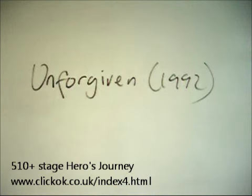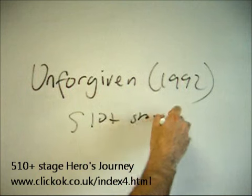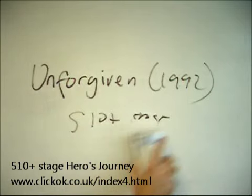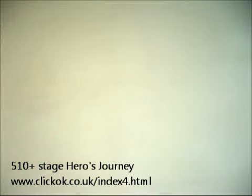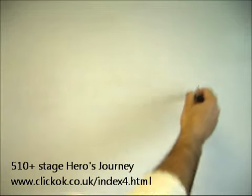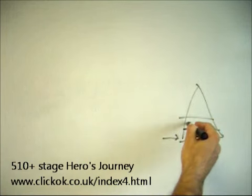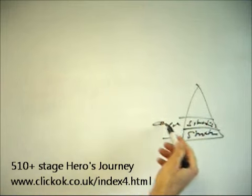I want to pull out some of the major points of Unforgiven, an Academy Award winner. It follows a 510-plus stage Hero's Journey pattern — a classic Hero's Journey applied to the Western genre. This is an indicator that genre is superimposed above the structure. You've got your core structure at the base, and then genre sits above it, so we can see that genre is a higher layer on the pyramid.